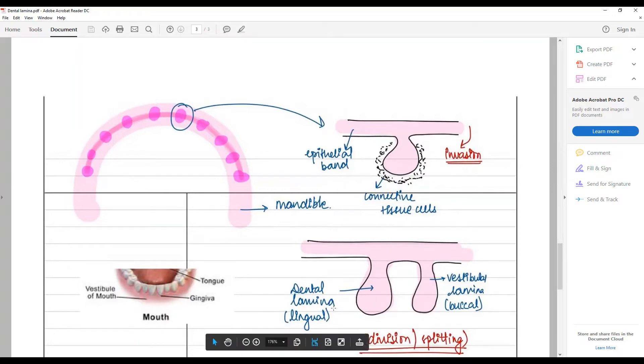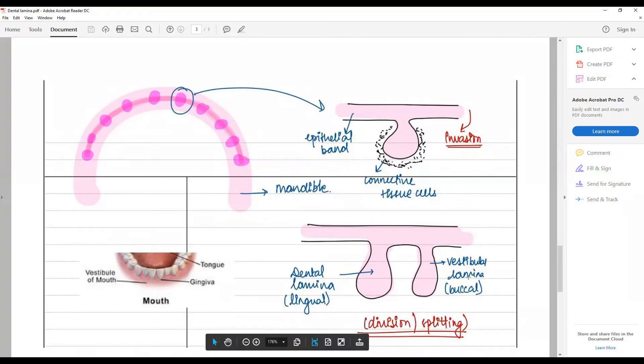This differentiates into a dental lamina which is lingual, and buccal lamina which is your vestibular lamina.